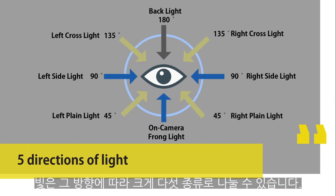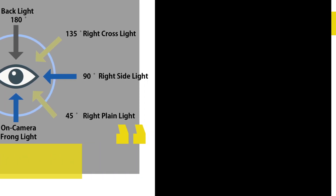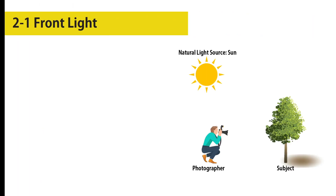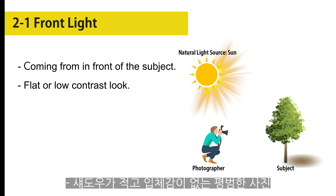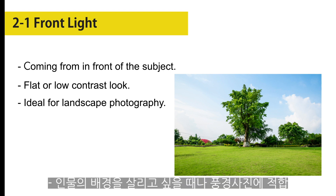There are mainly five directions of light. Front light is the light that is coming from in front of the subject. It creates highlights on the subject, leaving shadows behind. This makes the image look flat or low contrast. It's ideal for landscape photography rather than portrait photography.